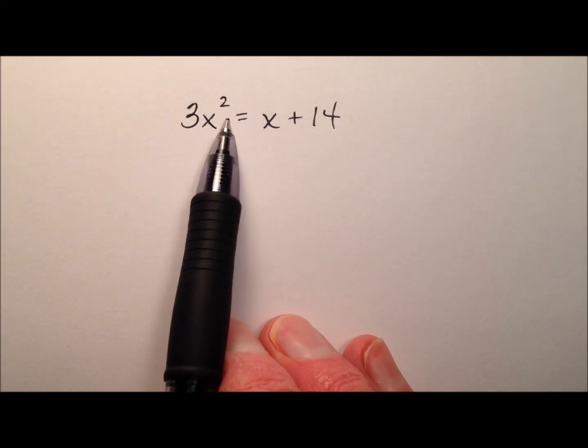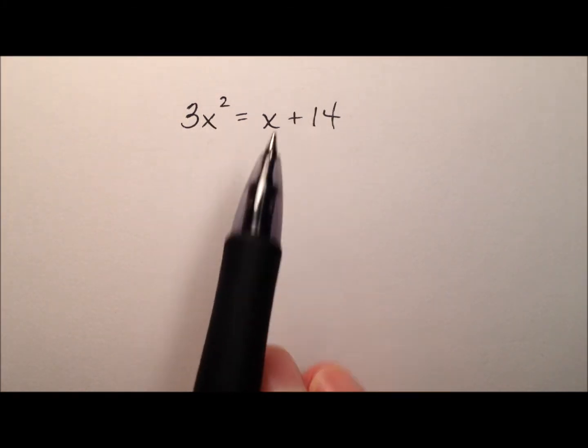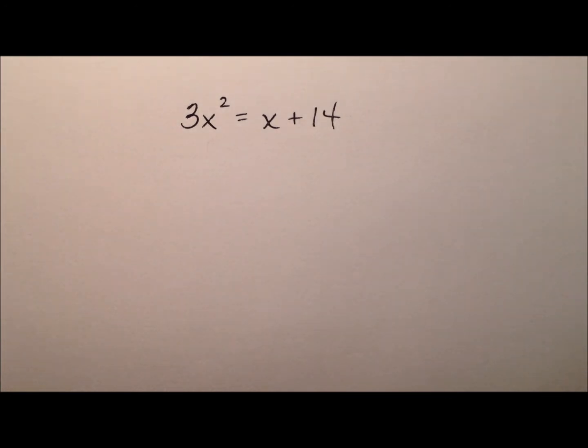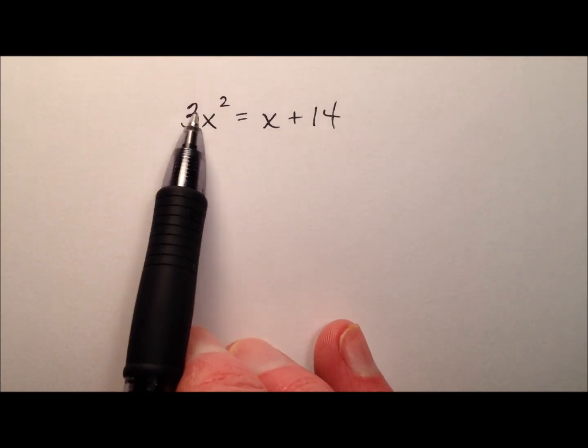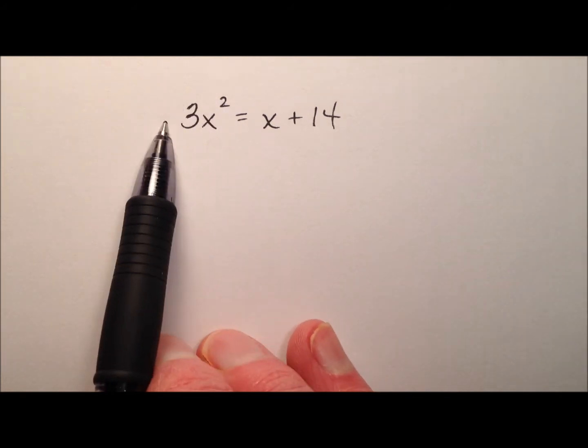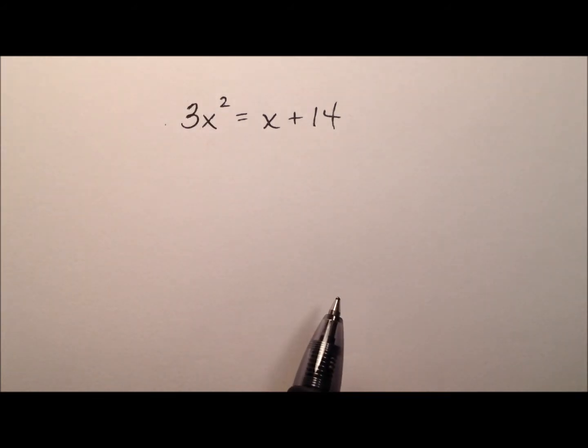Alright, so we're going to look for on which side will my quadratic term be positive, the x squared. And it looks like 3x squared is positive over here on the left side. So I'm going to go ahead and bring all the terms over to the left side.